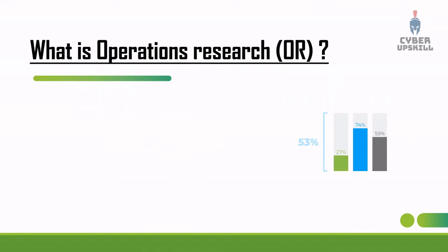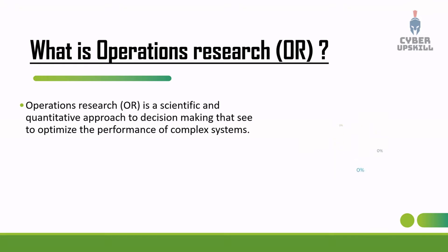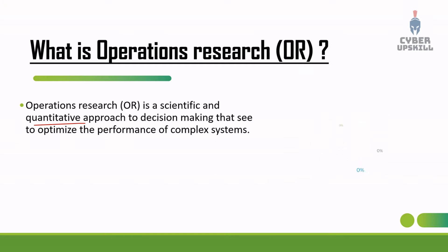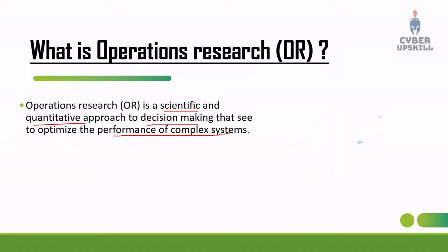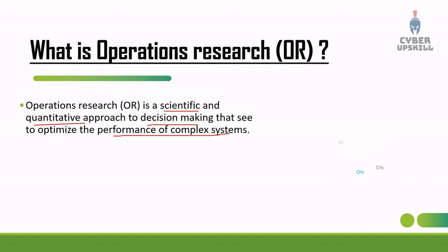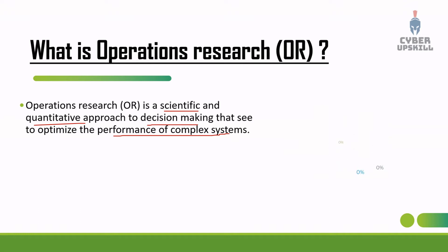Operation research is a scientific and quantitative approach to decision making that optimizes the performance of a complex system. Quantitative approach is a numbers game — it's scientific and number-based. It helps in decision making to optimize complex systems.